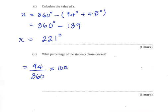So cancel the zeros here. We're going to end up with 940 divided by 36. And the answer is 26.1%. So 26.1% of the students chose cricket.